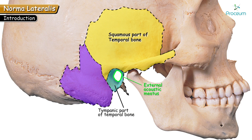Behind the external acoustic meatus, that is posterior to the ear, the blunt projection seen is the mastoid process. The mastoid is the blunt projection present posterior to the external acoustic meatus. Inferiorly, the temporal bone is identified by a slender sharp projection called the styloid process, or styloid part of the temporal bone. These are the parts of the temporal bone appreciable in Norma lateralis.